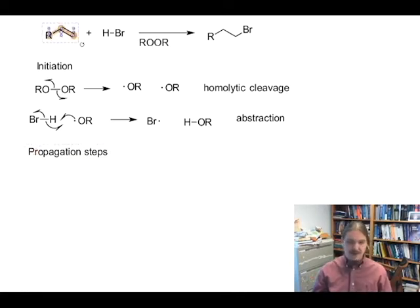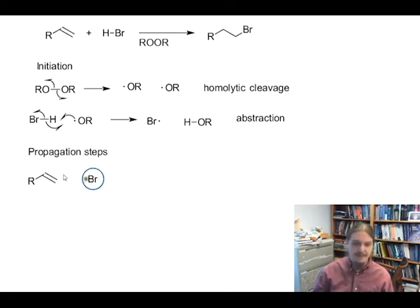We're also going to need our alkene. Now we have a bromine radical. Bromine radical can undergo addition to the alkene. We know where the bromine ends up. So I'm going to draw the bromine where we know that it ends up, and the radical ends up at the other spot. We end up with bromine on the less substituted end of the alkene.